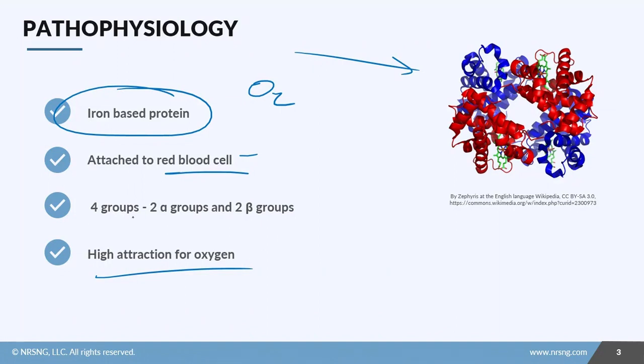Hemoglobin has these little groups, and they're four groups. You have two alpha groups—we'll call the blue ones alpha 1 and alpha 2—and then you have beta 1 and beta 2. They all have a responsibility of carrying oxygen.